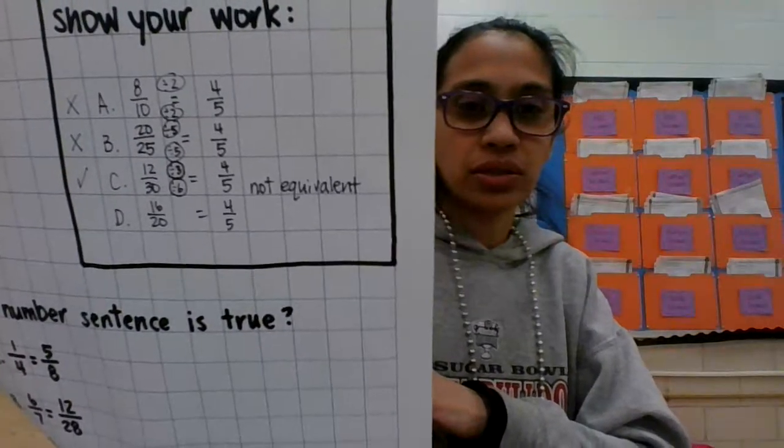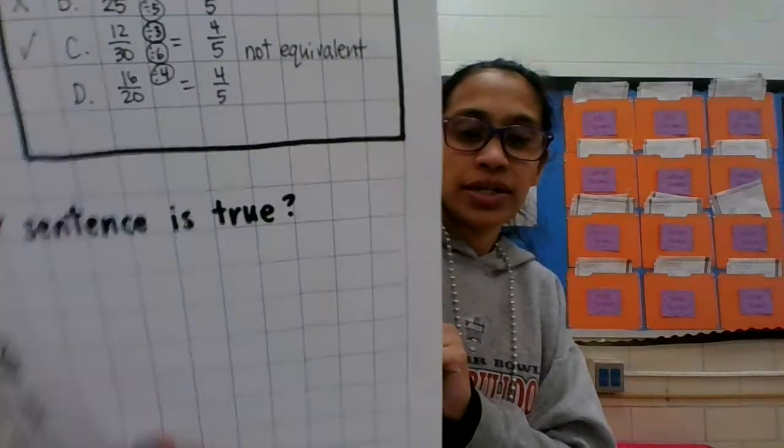To double-check, let's do D: sixteen-twentieths — is it equivalent to four-fifths? To go from 16 to 4, I divide by four. And 20 to 5? Also divided by four. Are they equivalent? Yes they are. So is that our answer? No, it is not. I'll mark these all as equivalent so we can see clearly that C was the only one that was not.